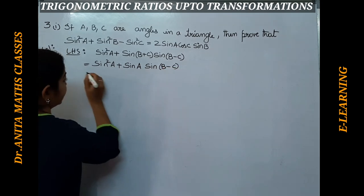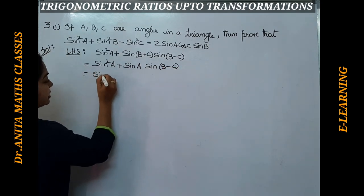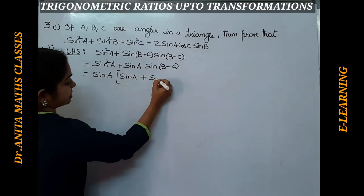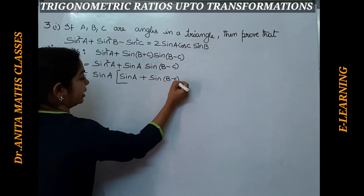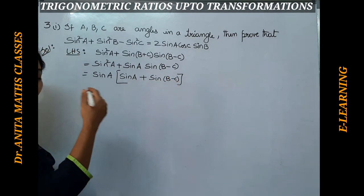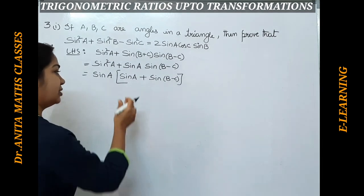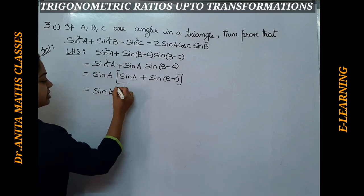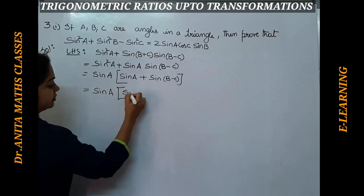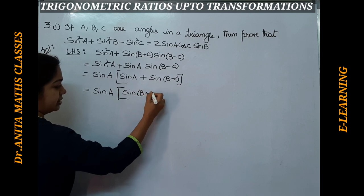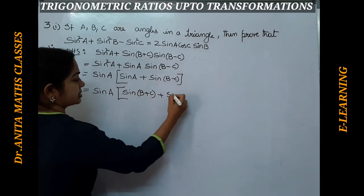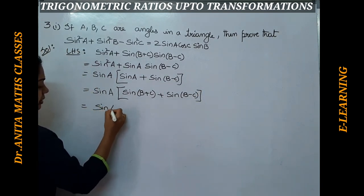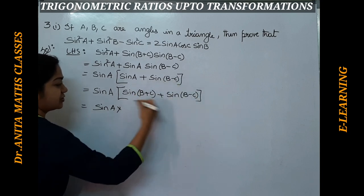We take sinA common, so this becomes sinA multiplied by sinA + sin(b-c). Then we replace sinA again as sin(180° - (b+c)), which equals sin(b+c). In the second quadrant sin is positive, so sinA = sin(b+c). We can write: sinA · [sin(b+c) + sin(b-c)]. Now the sum-to-product transformation formula applies.